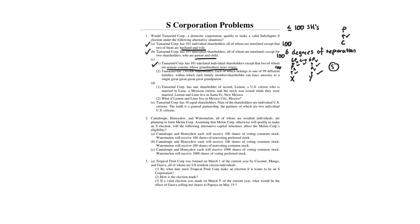In C2, Tamron has 150,000 shareholders, each of which belongs to one of 99 different families, and the families can trace their ancestry back to one single great-great-great-great-grandparent. With six degrees of separation: grandparents are two degrees, each level of 'great' adds one more — great is three, another great is four, another great is five, another great is six. We are within six, so all 150,000 shareholders are viewed as 99 families, within the 100-or-fewer requirement.